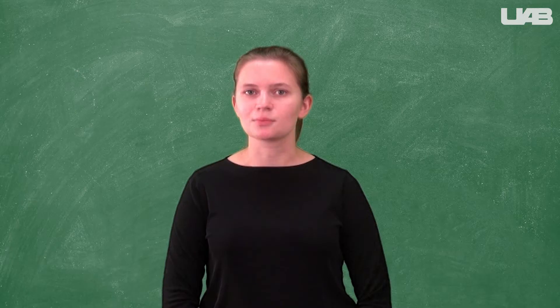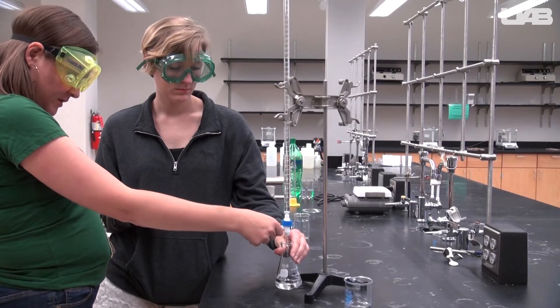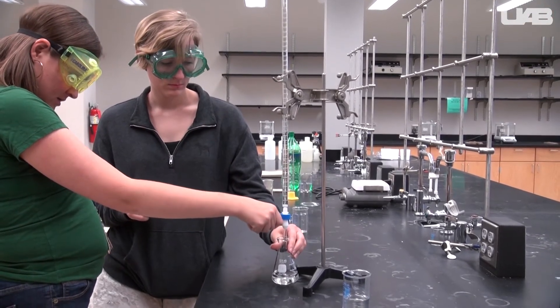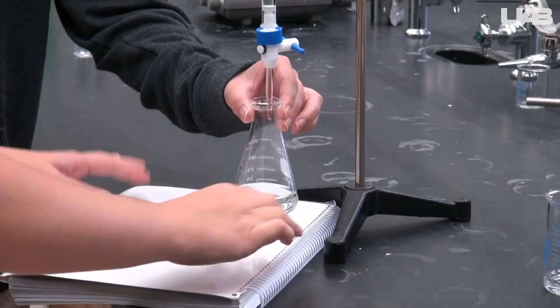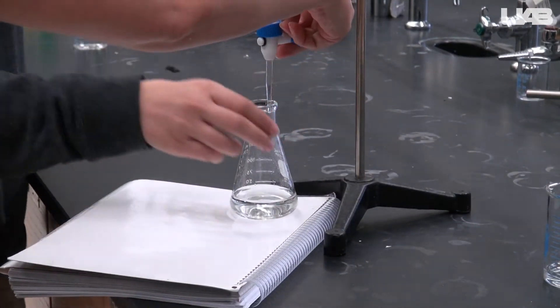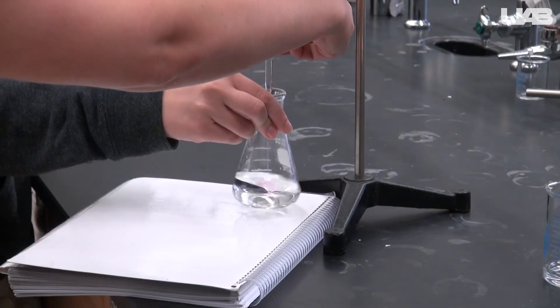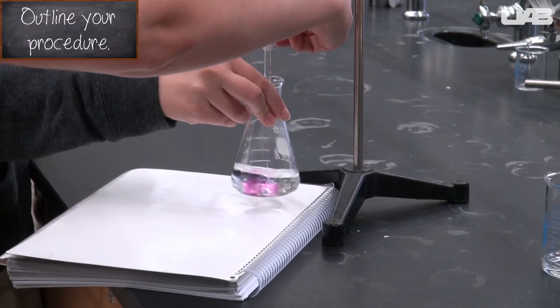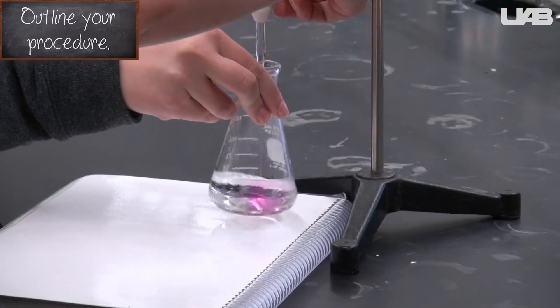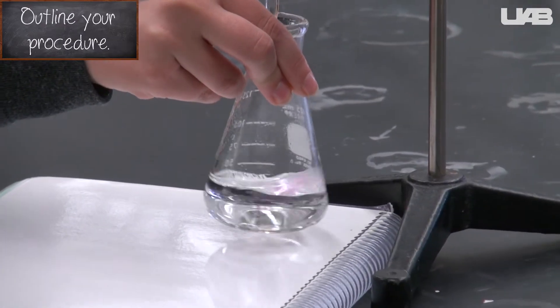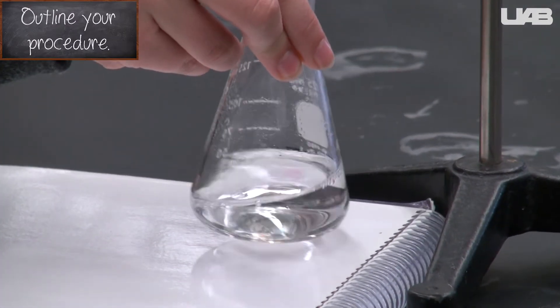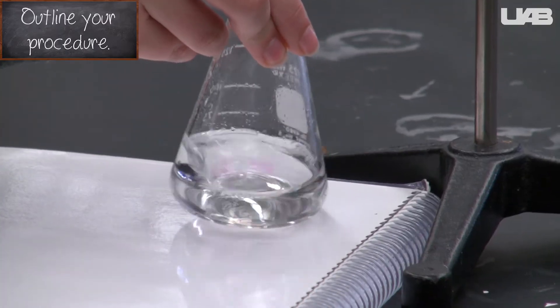Until you have had some practice with titrations, it would be wise to let one group member control the stopcock and the other group member hold the flask. Open the stopcock to allow the sodium hydroxide to flow out while swirling the Erlenmeyer flask. You can let it flow out fast at first, but when you start to see pink where the drops are splashing in, you should slow down and go more dropwise by turning the stopcock to a more vertical position.